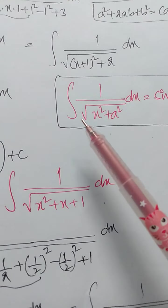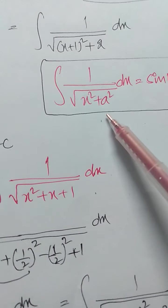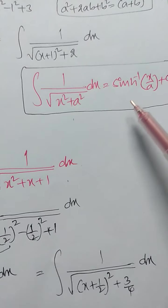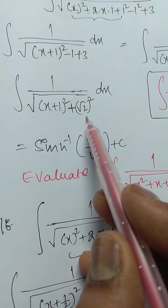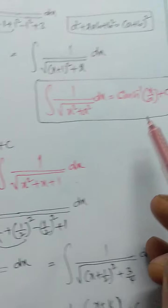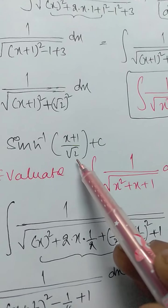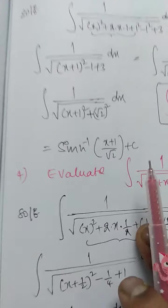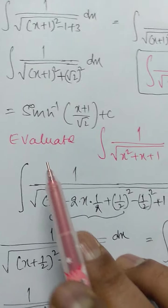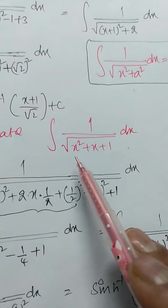This is in the form of integration of 1 by root of x squared plus a squared, dx, which equals sinh inverse of x by a plus c. Here x plus 1 is x and a is root 2. Substituting in the formula, we get sinh inverse of x plus 1 divided by root 2, plus c. This is the required solution. Now let us discuss another problem.